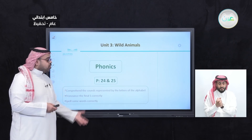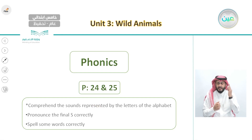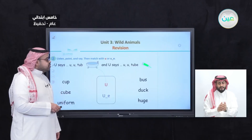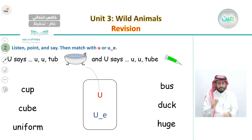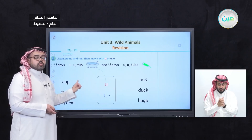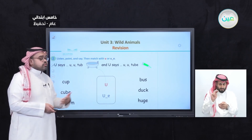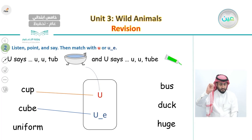The final lesson was Phonics on pages 24 and 25. Our goals were to comprehend sounds represented by letters, pronounce the final S correctly, and spell some words correctly. We learned to pronounce words with a single U sound — like the word 'top' — and words with U-E at the end — like the word 'tube.' After listening, we matched each word with its appropriate sound.